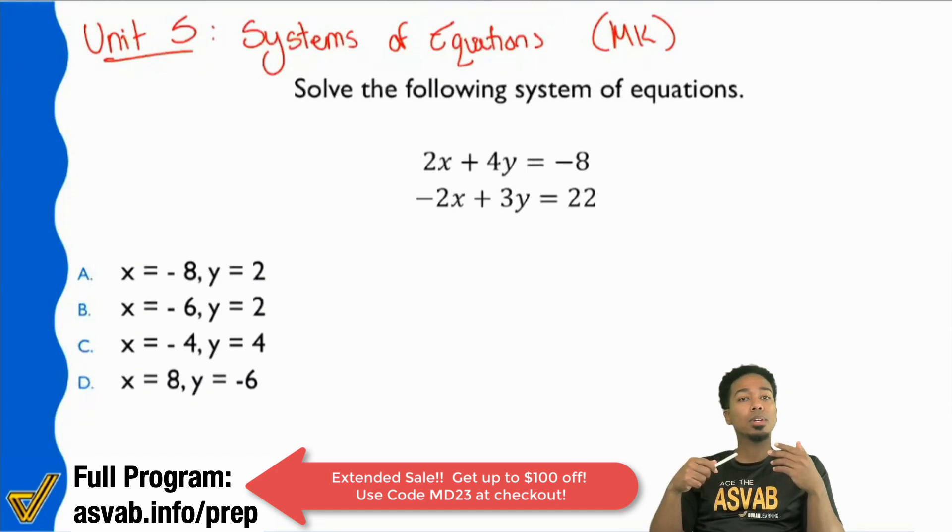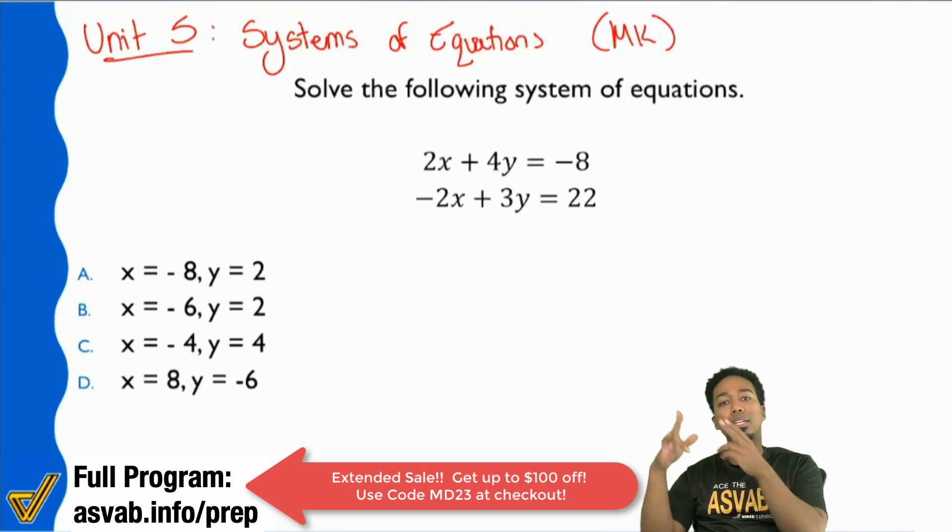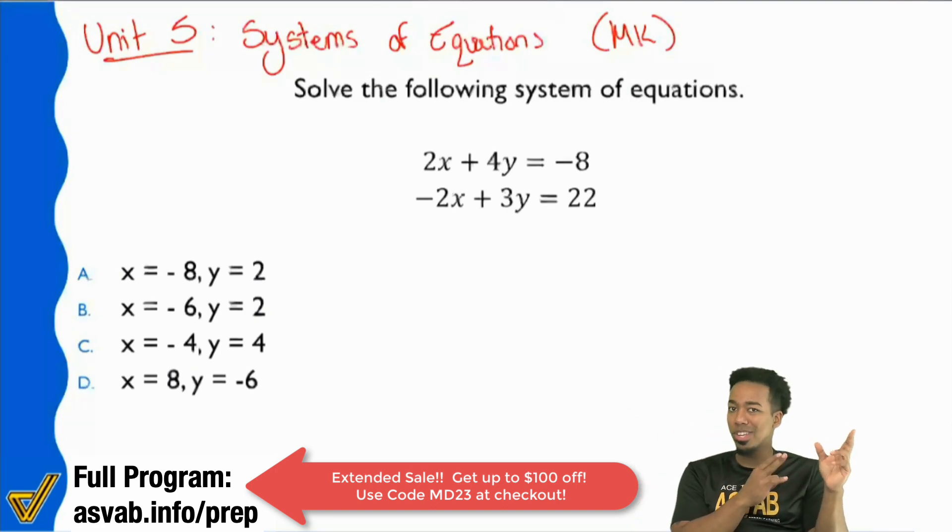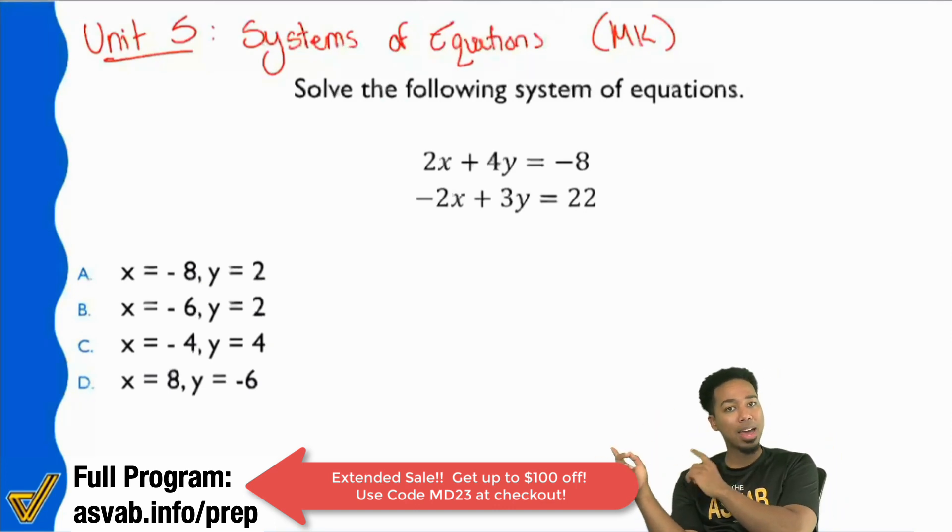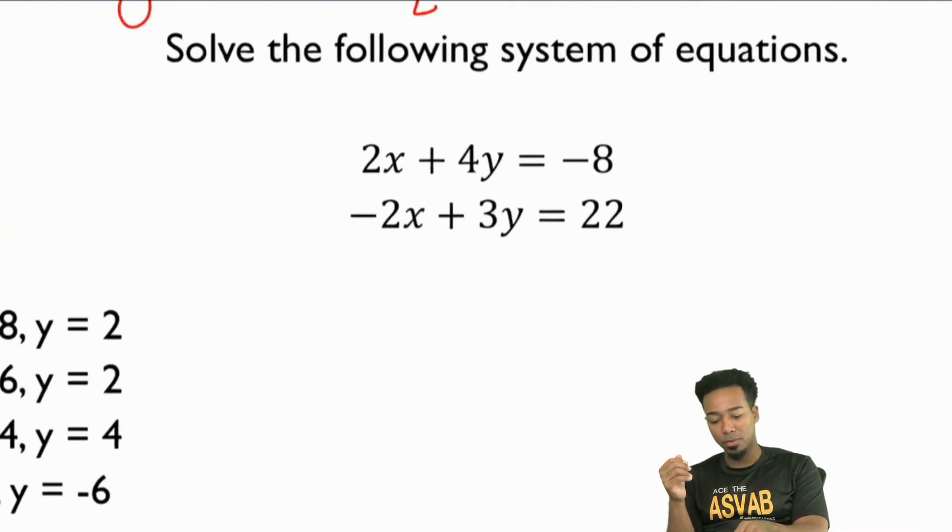So when it comes to math knowledge, remember math knowledge is the pure math side of things. It's the pure math. Just like you see it right there. It's laid out for you. Just do it. Now, when you look at the other side, arithmetic reasoning, that's word problems. That's context. Those are situations that you apply the math to. So yes, that's going to be unit seven when you mix word problems into it, but let's go ahead and focus on what we have in front of us here.